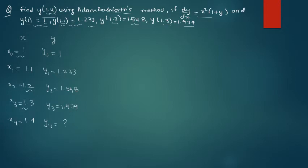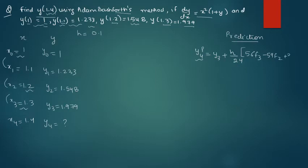So now because the method is about prediction and correction formula, here also you have to apply one formula which is if you need to find out the value of y prediction. Let's say because you need to find out y4, so it will be y3, that means the last previous y, then the interval as you can see the difference between the terms here, the class size is 1.1 minus 1, that means 0.1. h by 24.